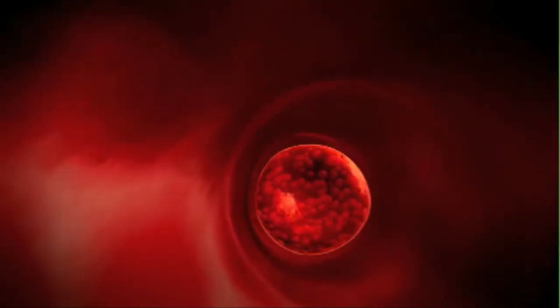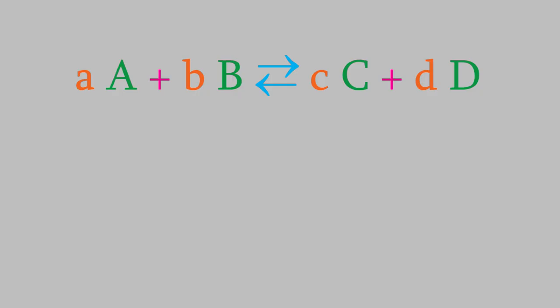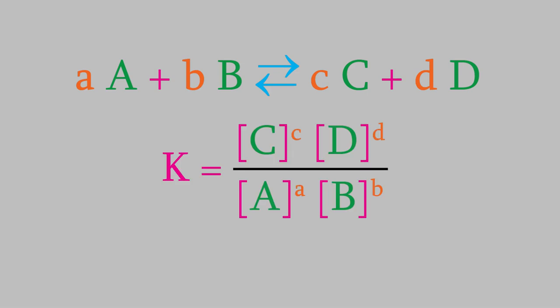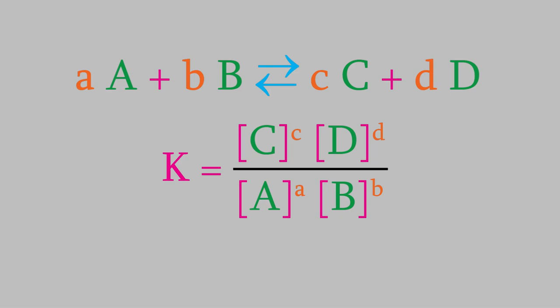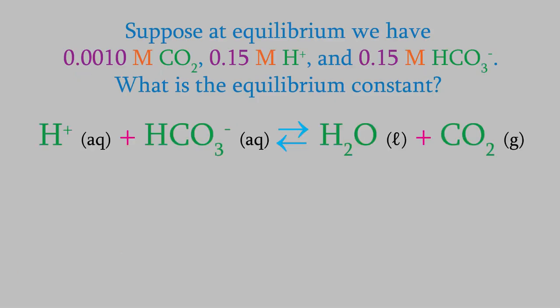So let's get back to our discussion of equilibrium. We've seen that we can write concentrations of compounds in a reversible reaction in this ratio, and that the ratio always has the same value at equilibrium, called K, the equilibrium constant. Suppose we're studying this reaction, and at equilibrium we have 0.0010 molar CO2, 0.15 molar hydrogen ion, and 0.15 molar bicarbonate ion. What's the equilibrium constant?